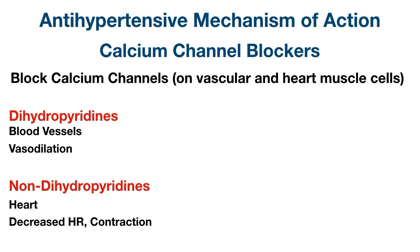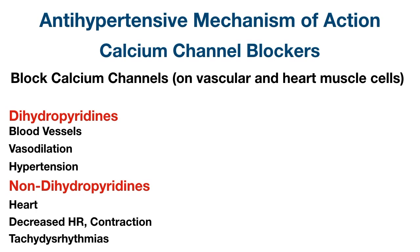Dihydropyridines cause vasodilation by blocking calcium channels on blood vessels, whereas non-dihydropyridines decrease heart rate and cardiac contraction by blocking calcium channels in the heart. As a result, dihydropyridines are more common for hypertension and non-dihydropyridines are used more for tachydysrhythmias, though they can still affect blood pressure. Since we're focusing on antihypertensives, let's take a closer look at dihydropyridines.